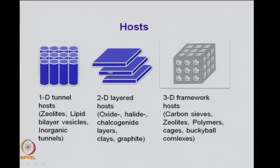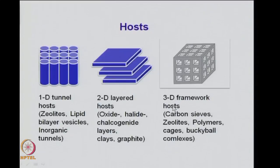Here you get two-dimensional structures when you use 2D layered hosts, and there are also 3D framework hosts which form porous structures with pores inside. Many materials including zeolites can have cylindrical pores or 3D pores of the order of 4 to 20 angstroms. You can use many other polymers and buckyballs as 3D framework hosts where you can generate only particles and not layers or wires. Normally you will generate particles when you use 3D hosts as templates, whereas with 1D and 2D hosts you can generate wires and 2D layers respectively.